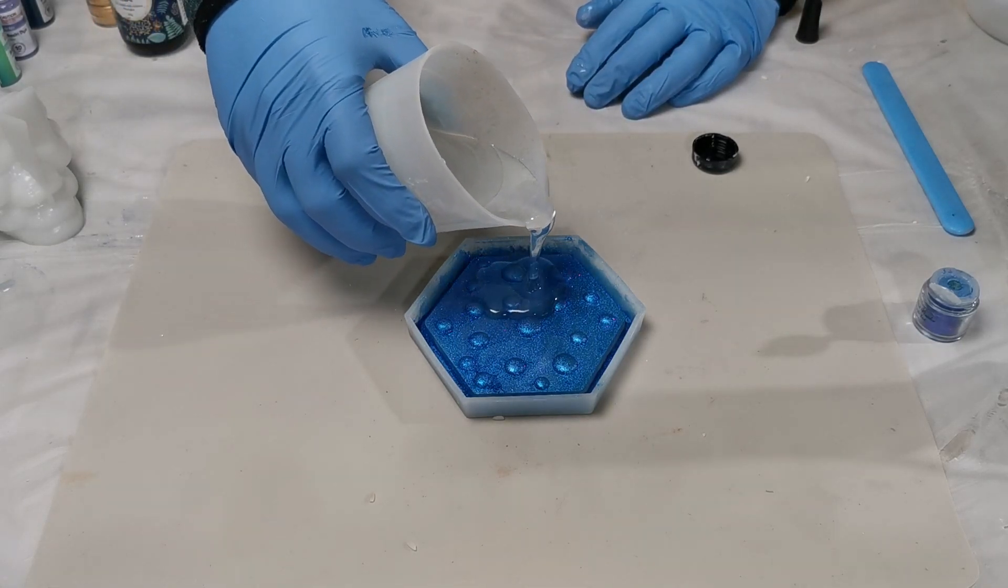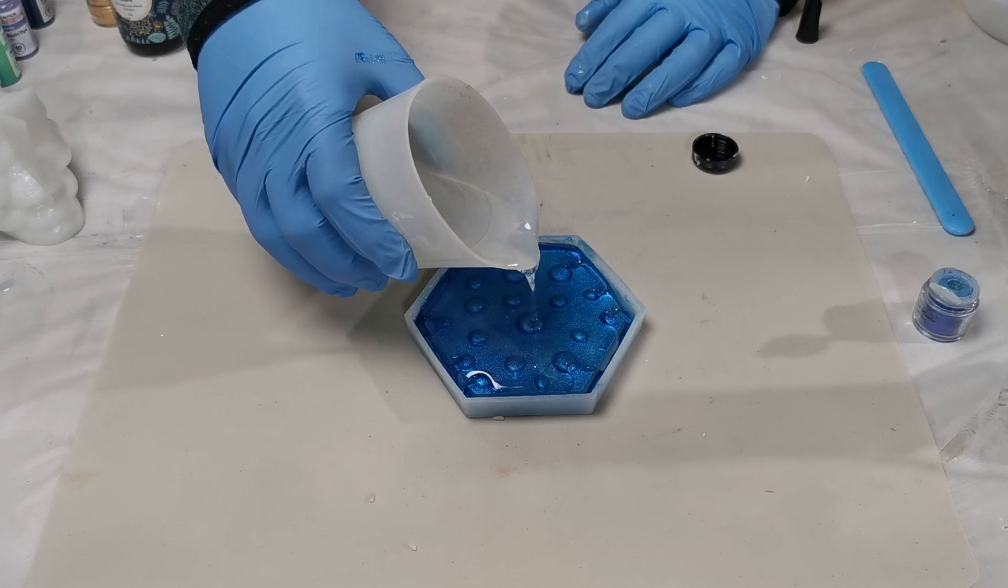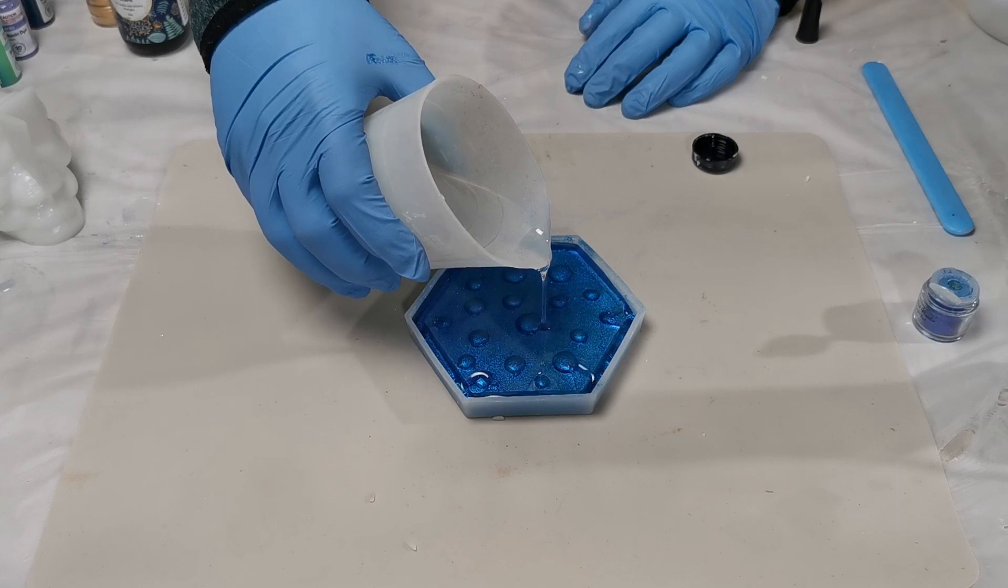When pouring the resin, nice and slow is the trick. We want to reduce any air bubbles forming, so we just slowly pour in to fill up the mold.